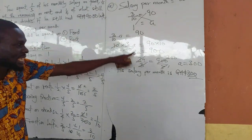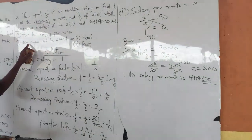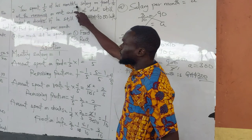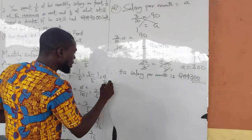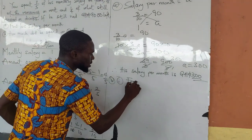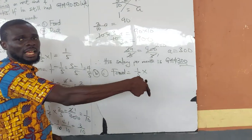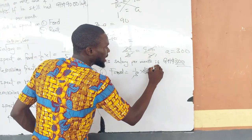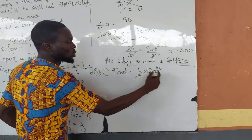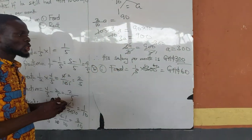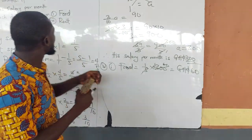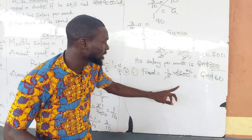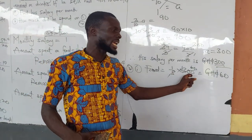We are done with Part A — the salary per month is 300 Ghana cedis. For Part B, how much did he spend on food? The question said he spent one over five of his monthly salary. So if his monthly salary is 300 Ghana cedis, then food equals one over five times 300. Five cancels into 300 — five goes into 300 sixty times. So the amount spent on food is 60 Ghana cedis.